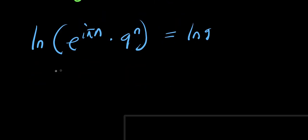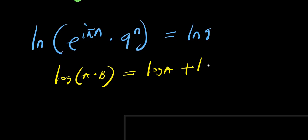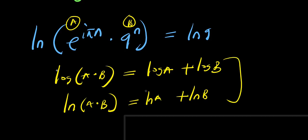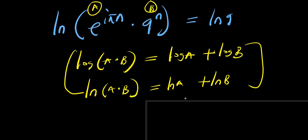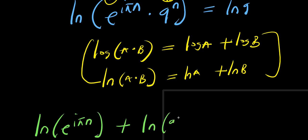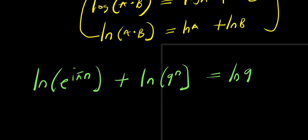Now remember, in this method we make use of this identity: if you have log(a times b) equals log a plus log b. This is my a and this is my b. So that means natural log of a times b equals natural log a plus natural log b. So we are simply going to have natural log of e to the power i times pi times n, plus natural log of 9 to the power n, equals natural log of 9.